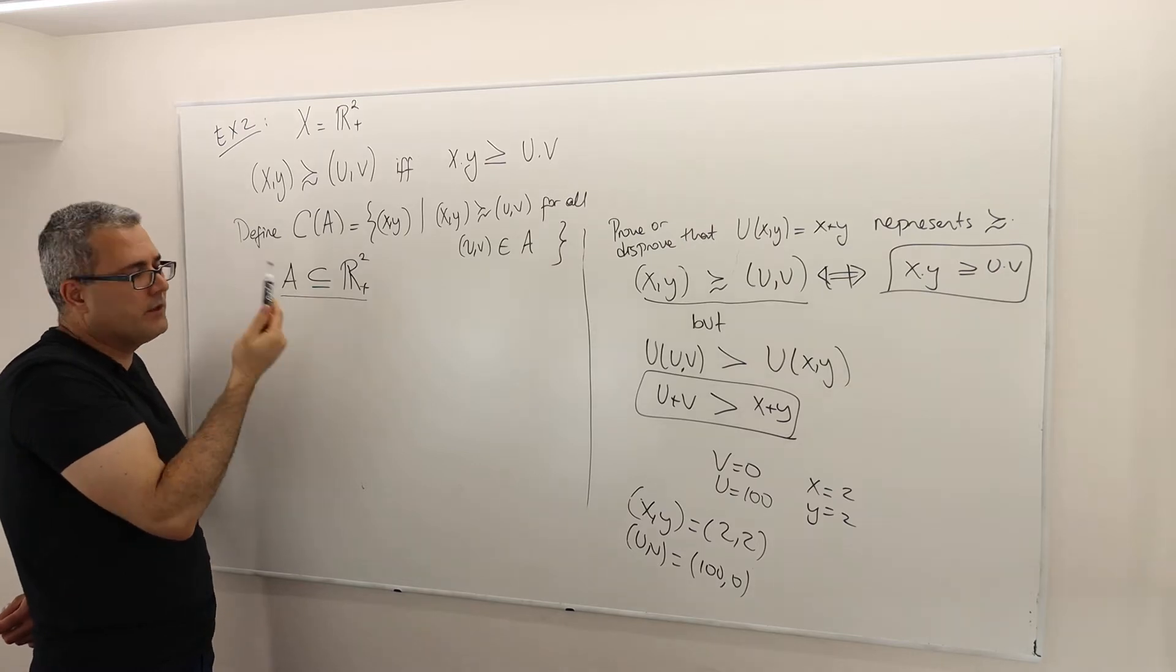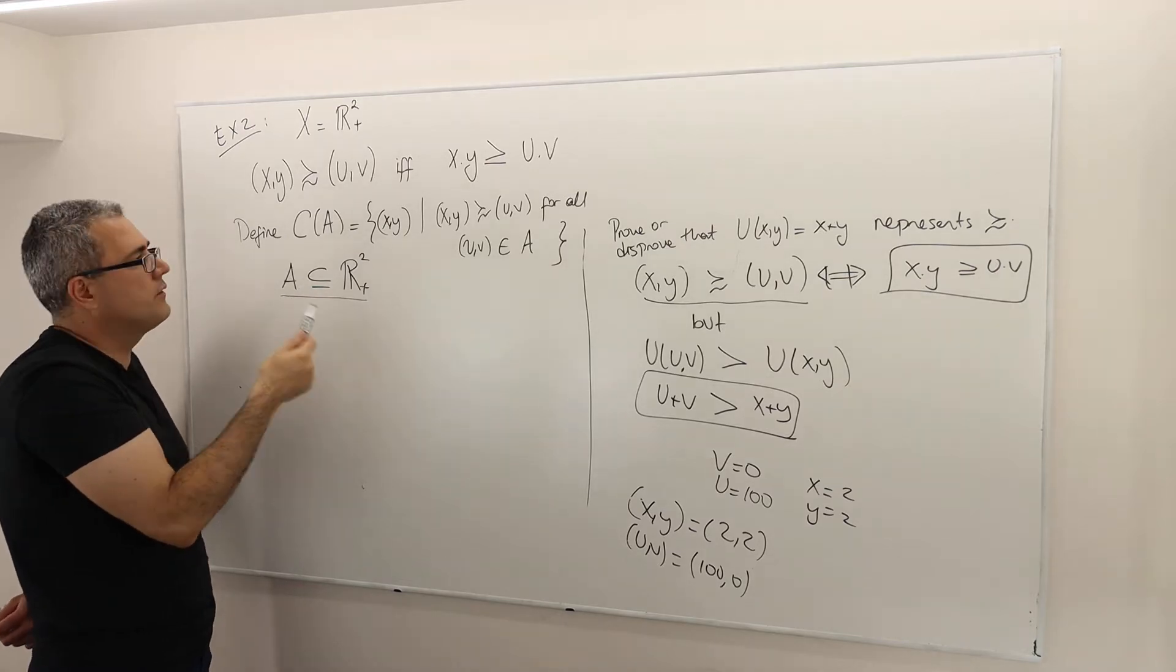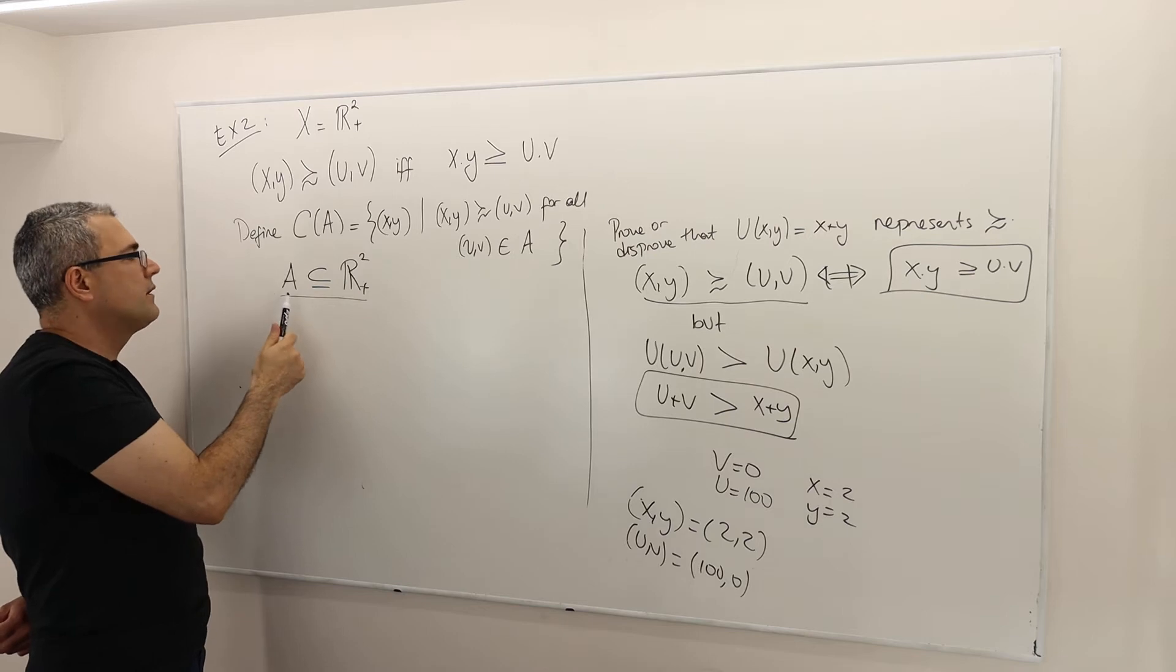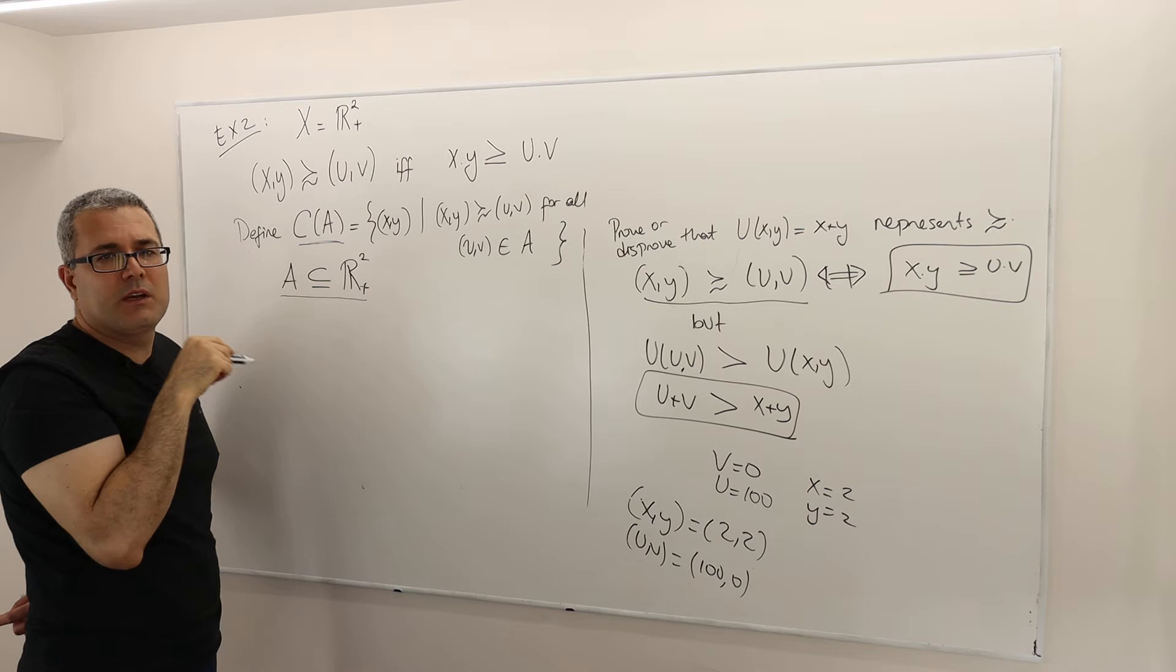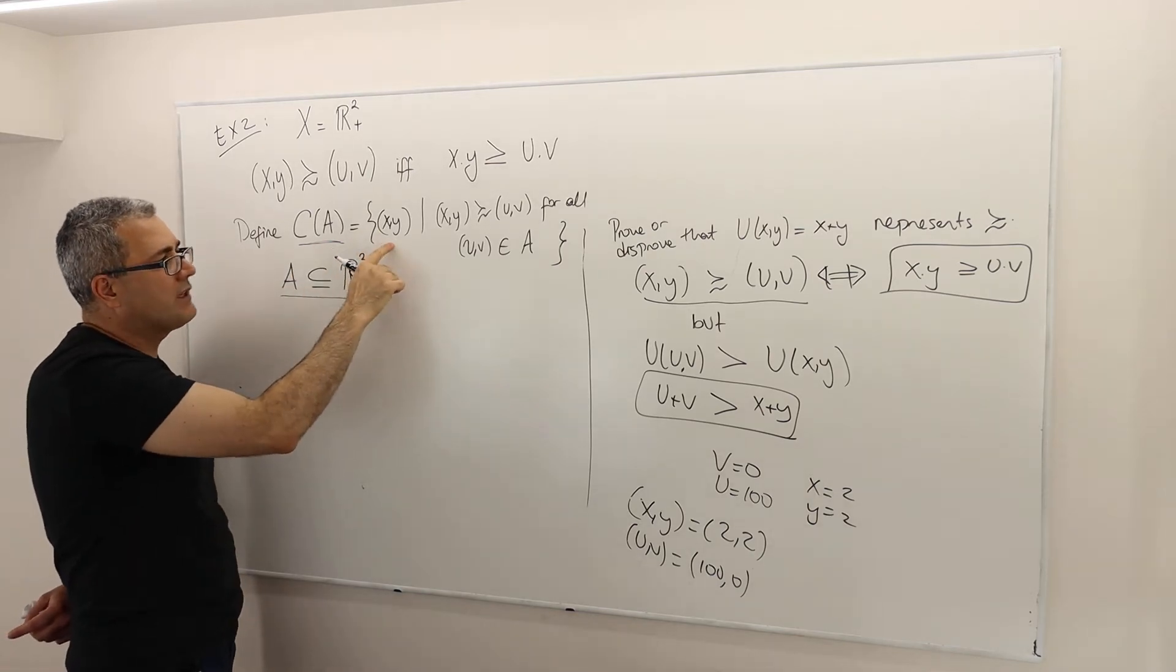I want it to be non-empty because as I said, if it is empty, there's nothing to choose. So for any such non-empty set, what is going to be the bundle that I'm going to pick? Well, pick the bundle X, Y,